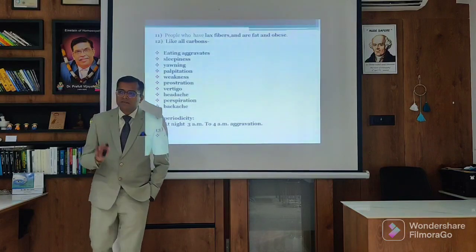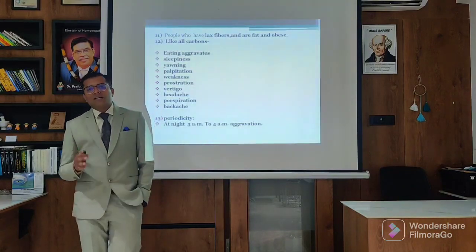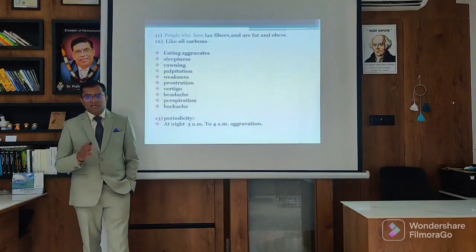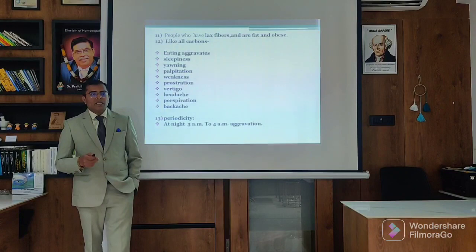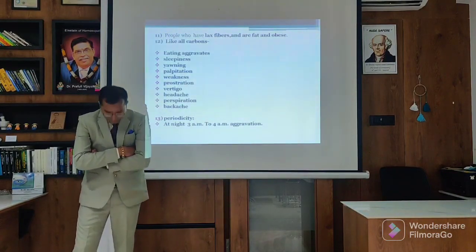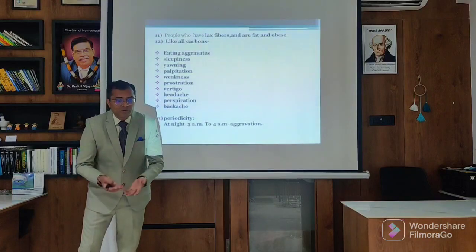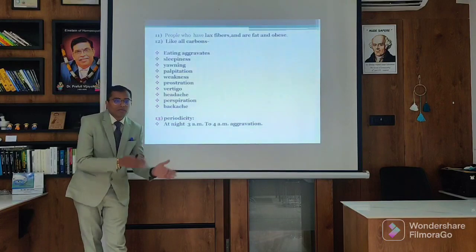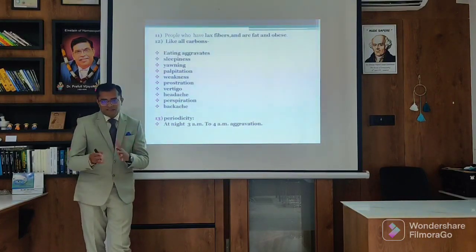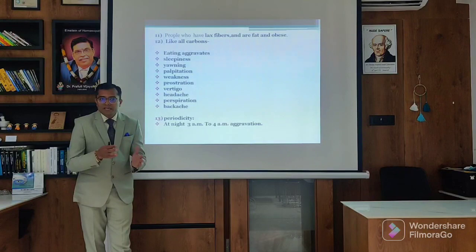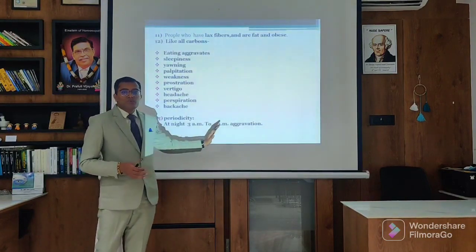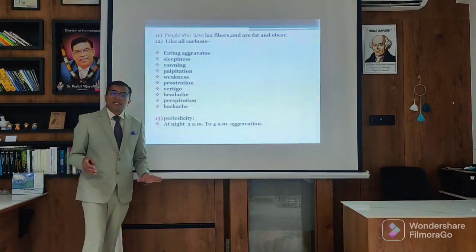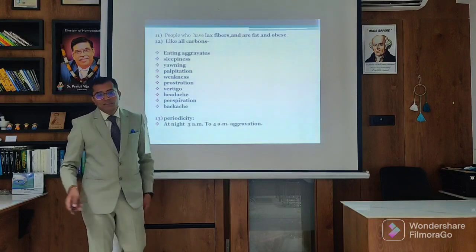When you find 2 to 4 AM aggravations at night, especially in asthma with the person sitting bent forward, you can think this asthma with bending forward is arsenical. But the time modality of Arsenicum is about midnight - about 11 to 1, around 12 midnight. But in Kali it is 2 to 4 AM. On the basis of 2 to 4 AM aggravations, you can prescribe Kali Carb. This is a very important modality of Kali Carb.